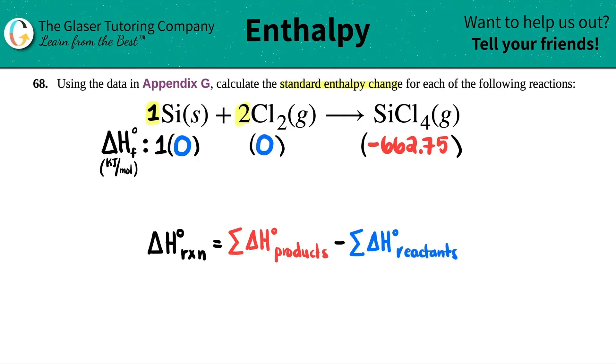There's two chlorines here, so technically I would multiply this by two, and then there's one silicon, so I would multiply this number by one. Okay, so I still get zero, I get zero, and this number would be the same.